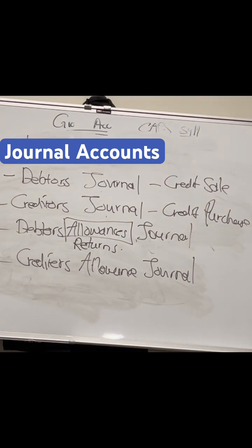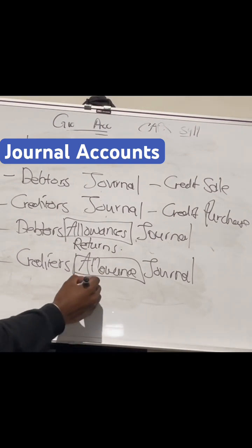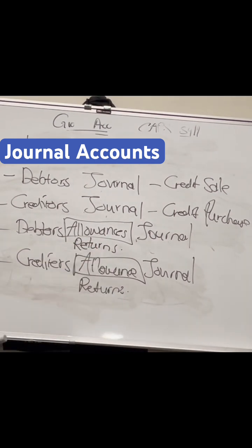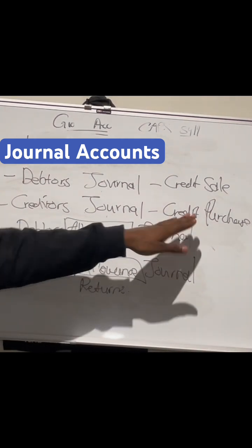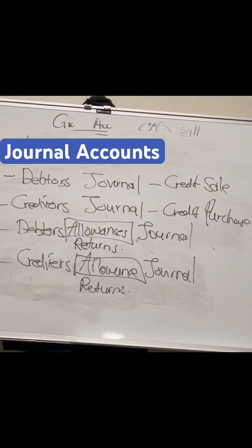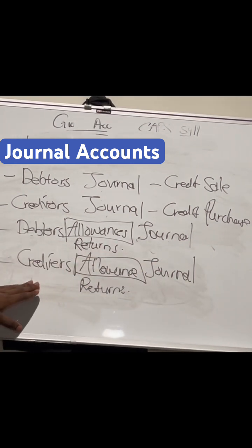And then we go back to the creditors — it's the same concept. With allowances, we're looking at returns. Where we, as the credit purchasers, receive goods and find out that they are not satisfactory, we can return the goods back to our creditor.